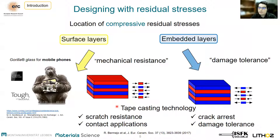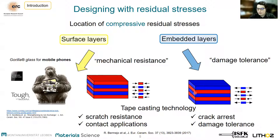Depending on the location of the compressive residual stresses, we can distinguish between two systems. In the first one, the compressive stresses are located in the outer surface region, which is used to enhance the mechanical resistance. In the second system, the compressive residual stresses are embedded within the architecture to increase the resistance to crack propagation, allowing even the arrest of cracks starting from the surface in the embedded layer region. This is called the damage tolerance system.